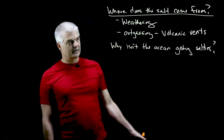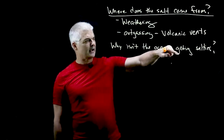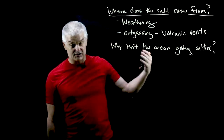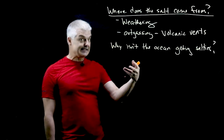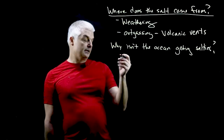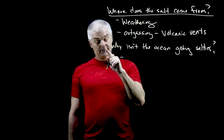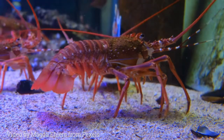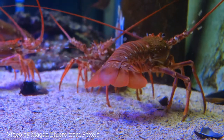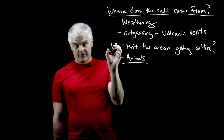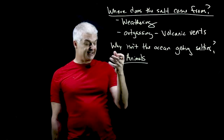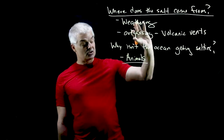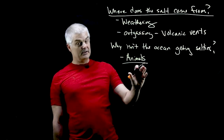But this begs an interesting question: why isn't the ocean getting saltier? We have weathering, outgassing, and stuff from the bottom of the earth adding salt over millions of years — and yet it's not getting saltier. The explanation is a couple of things. Animals play a role, especially crustaceans, because they take the water and make the shells of their living organisms, and then they die and the shells sink to the bottom. So that's a way to take some of the saltiness out of the ocean.